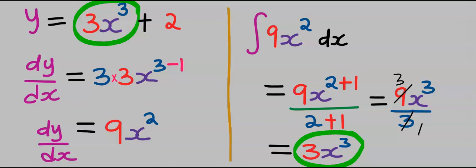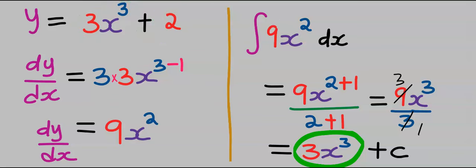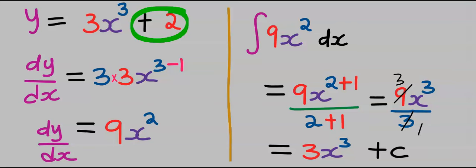Unfortunately, the constant discarded by differentiation is lost in integration. Hence we add C to take care of any constant discarded or disregarded by differentiation. Whenever you integrate a function you must add C at the end of the result — it doesn't matter whether the lost constant is negative, you must still add a plus C.